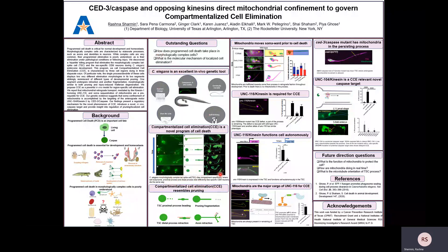Another cell called the CM neuron dies in a similar manner, which indicates this type of compartmentalized cell elimination is a universal event. The proximal process fragmentation is similar to pruning fragmentation, and the distal process retraction is similar to axonal retraction.